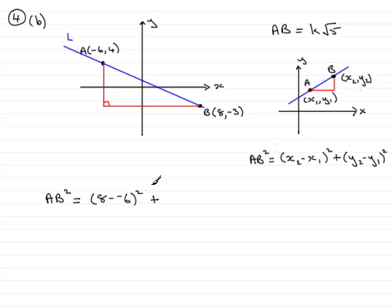Then we have to add it to the difference between the Y coordinates. And the difference between the Y coordinates will be 4 minus minus 3. So that's 4 minus minus 3. And then we square that length. This comes to 7. So this distance here is 7.